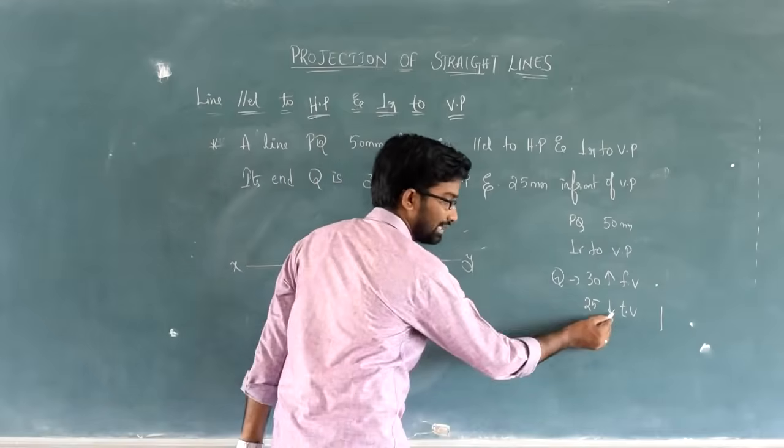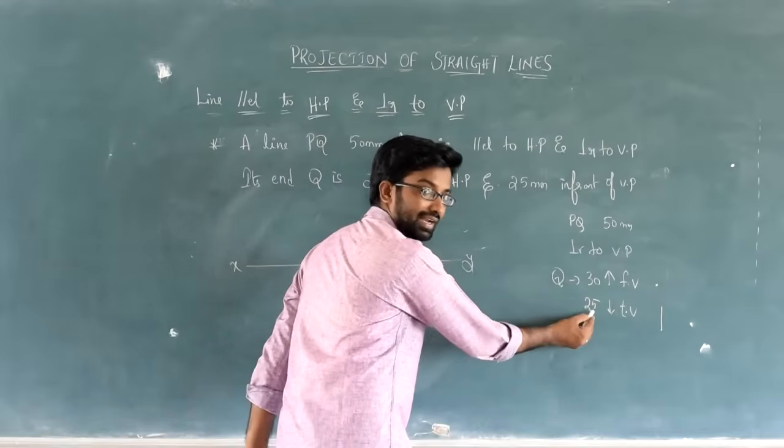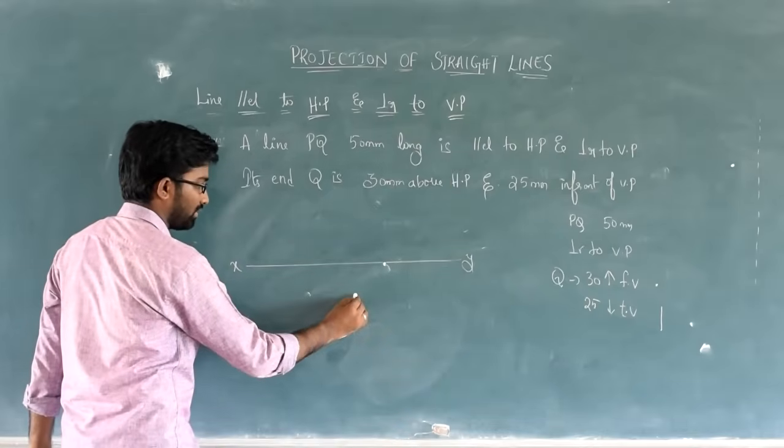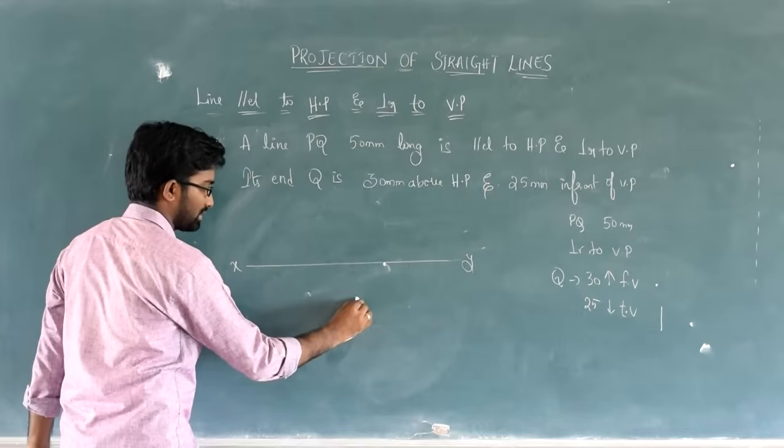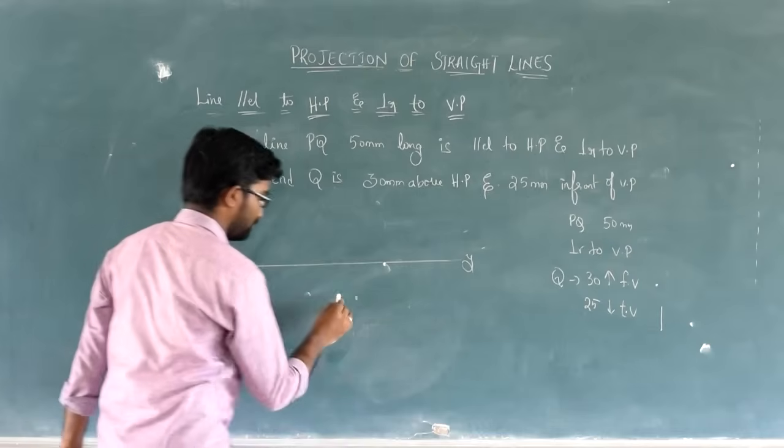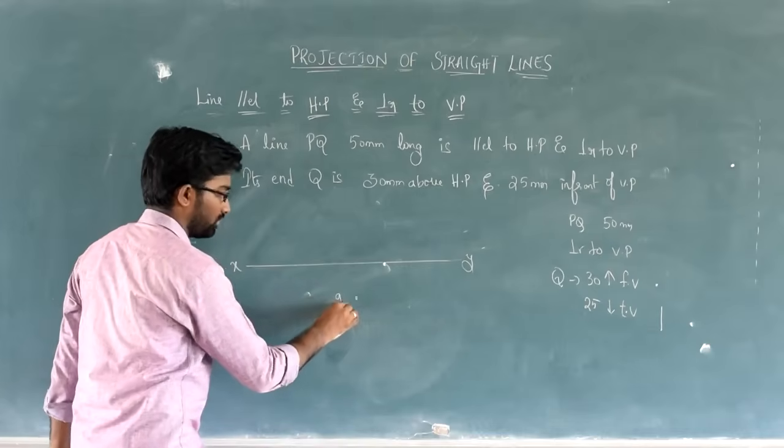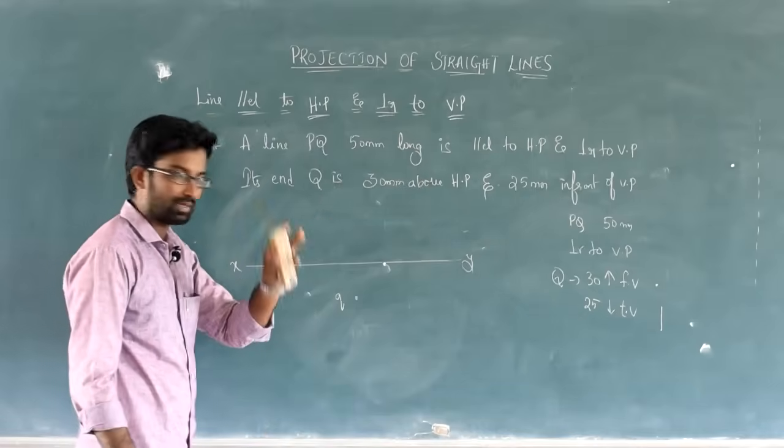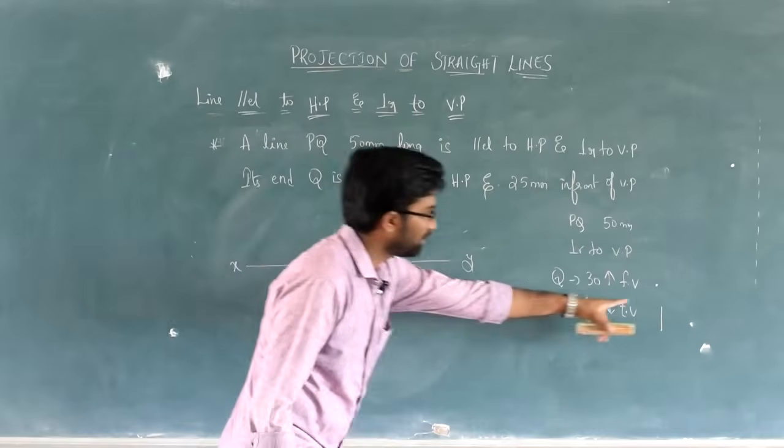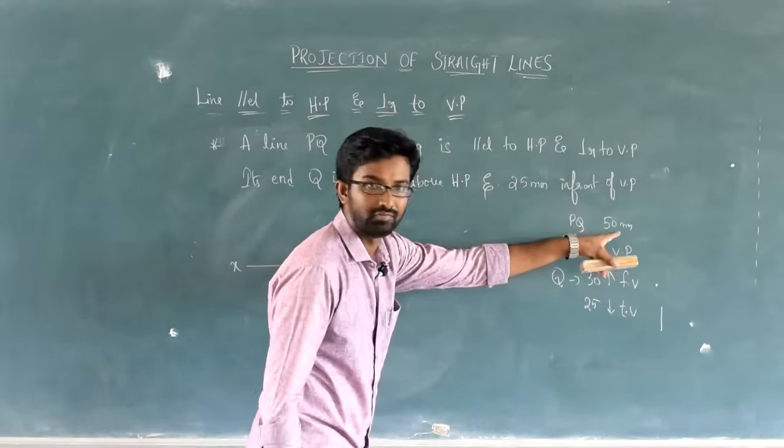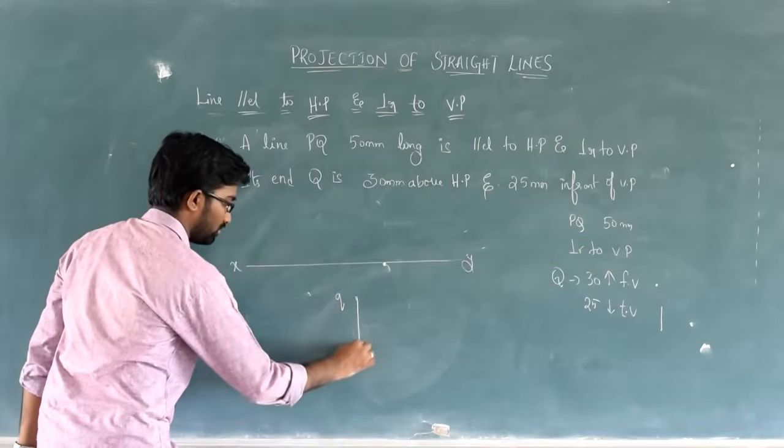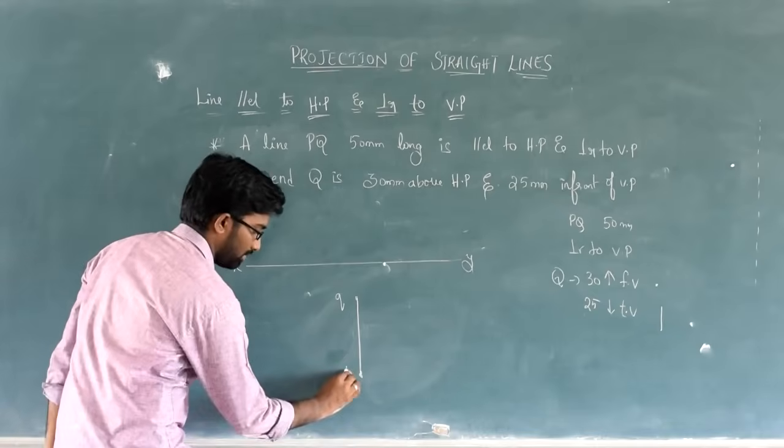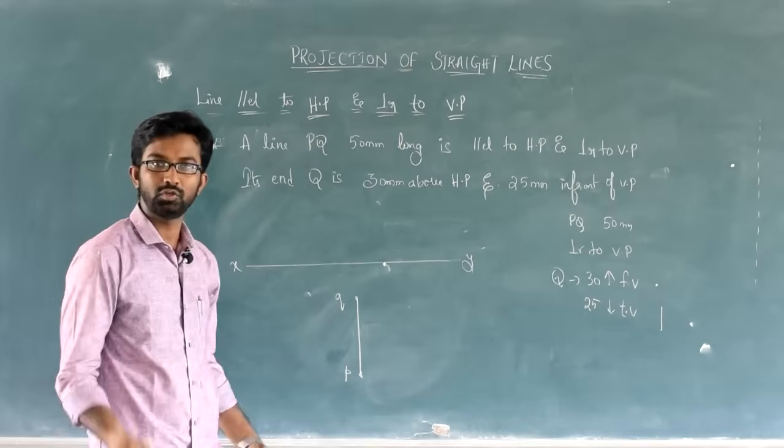So, first draw reference line X and Y. Now, should we draw front view or top view first? Top view, because top view shows line. So, top view is below, how many mm below? 25 mm below. So, from here, 25 mm down, I will put first end, its name is Q. So, Q - top view, no dashes. Only front view has dash.